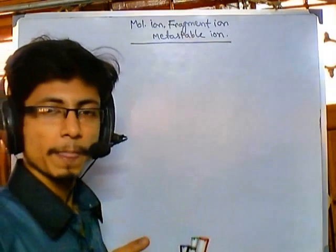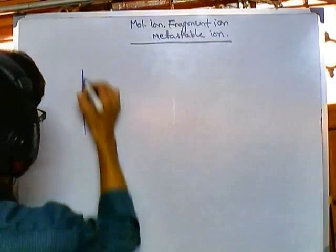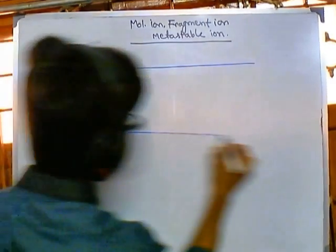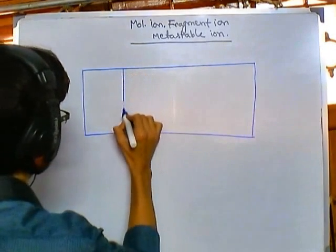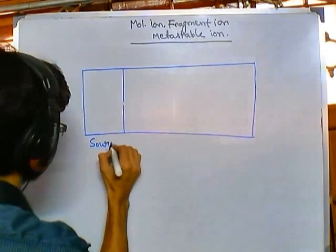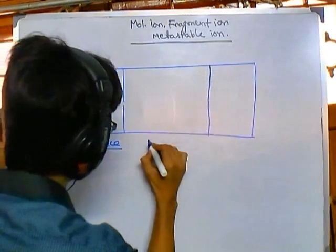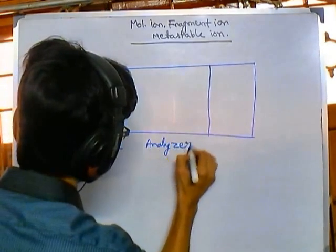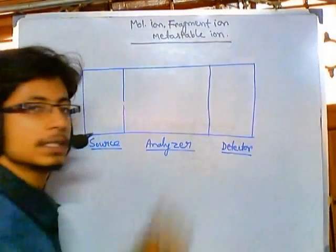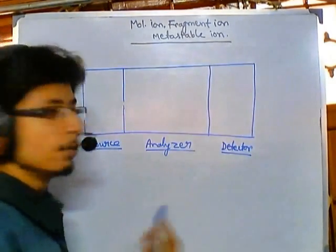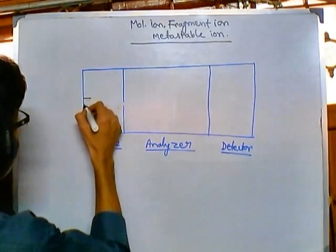For understanding all of these ions you must know the basic principle of mass spec. If I draw the instrument of a mass spec it will be clear. This is a schematic representation — this is the source region, this is the long analyzer portion, and this part is where the detector is present. So these are the three major sections of a mass spec instrument.